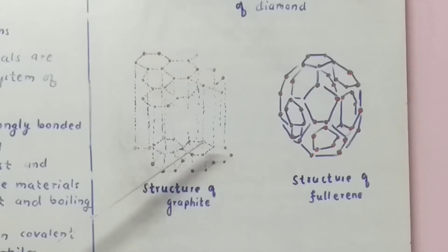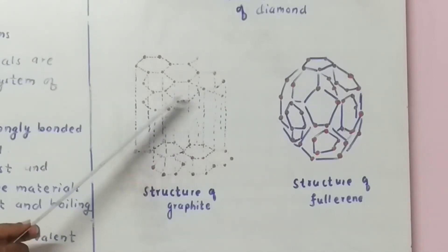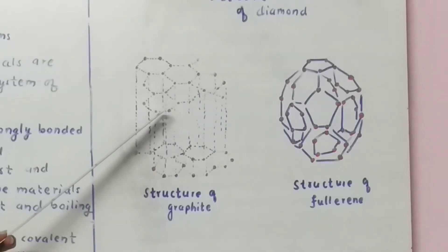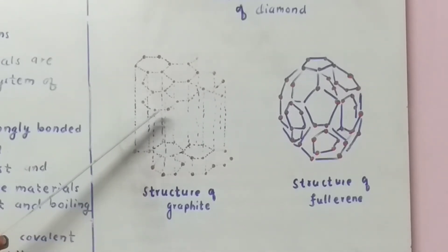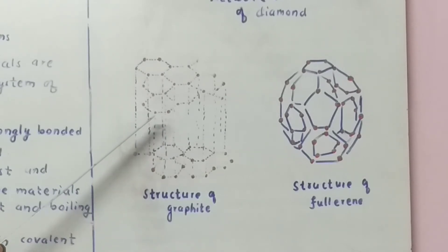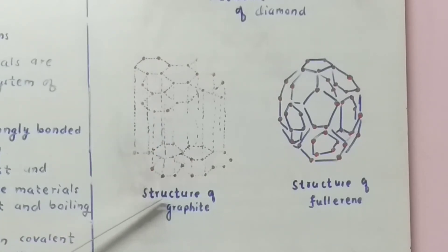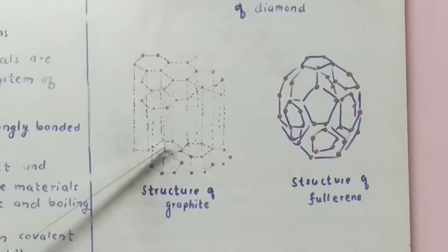And in graphite the carbon atoms are held together by weak van der Waals forces of attraction. This makes graphite soft and good lubricant. So this is the structure of graphite.